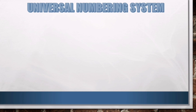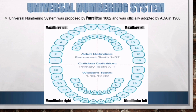First, let's know about the Universal Numbering System. It was proposed by Parrott in 1882 and was officially adopted by the American Dental Association in 1968. In this system, numbers 1 to 32 are used to denote the permanent teeth, and English alphabets A to T in uppercase are used to denote primary teeth.